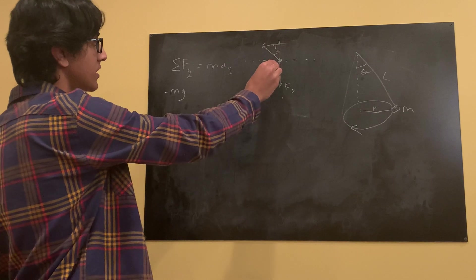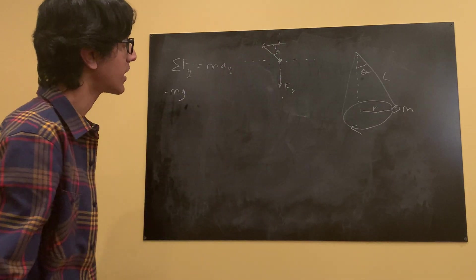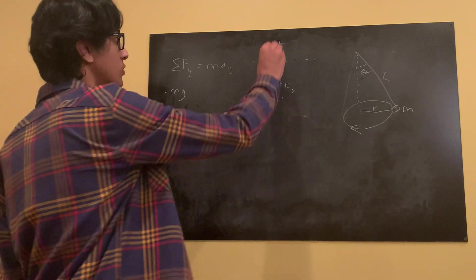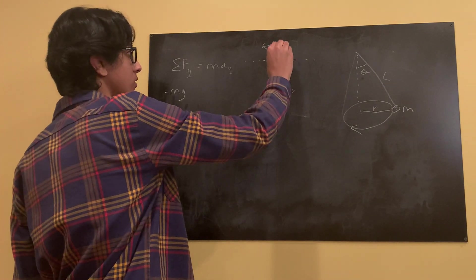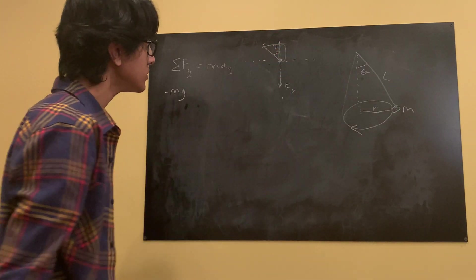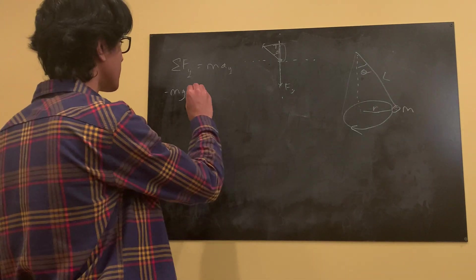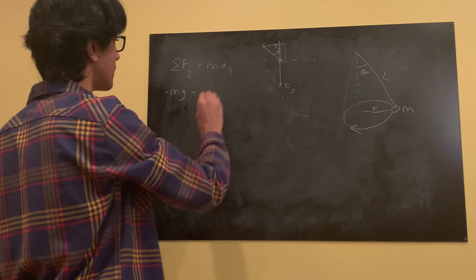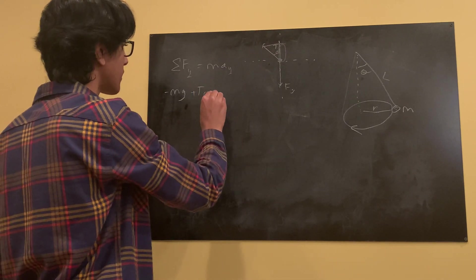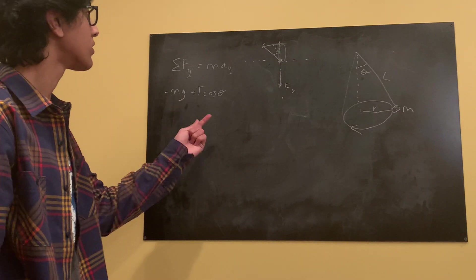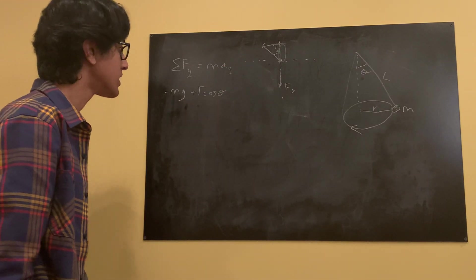Some of it is in the y direction. We want to assign which part of it is in the y direction. So that would be this side of this triangle, right? So how would we find that? Through cosine. So plus, since it's positive, so t cosine theta. That is the vertical component of t, t cosine theta.